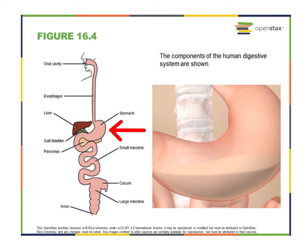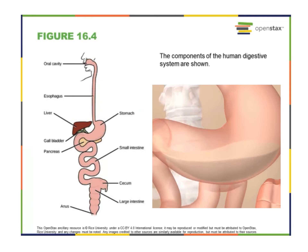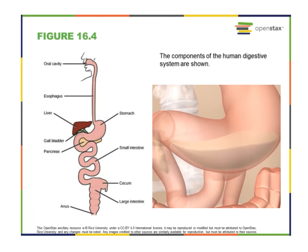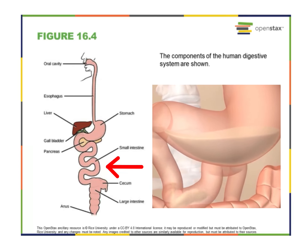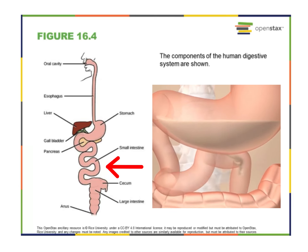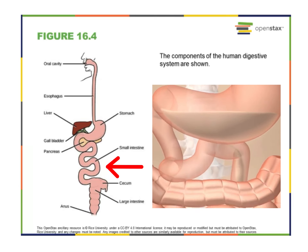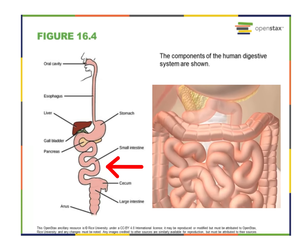Your stomach also moves around and helps break things up that way. Eventually, everything you eat creates a mixture called chyme. A lot of that process in your stomach is highly acidic, but it's protected by a thick layer of mucus. That chyme — that slurry, that sludge — is then released into your small intestine a little bit at a time.